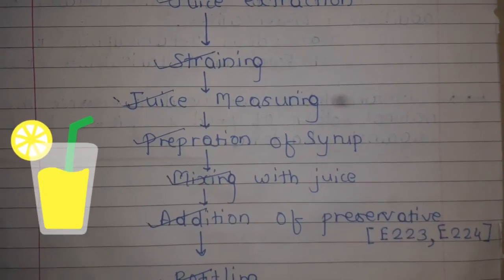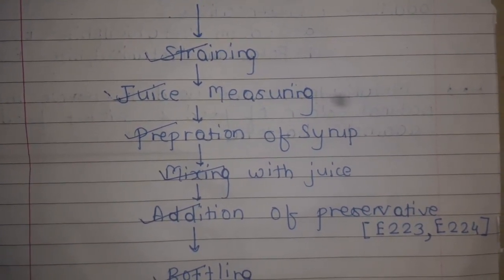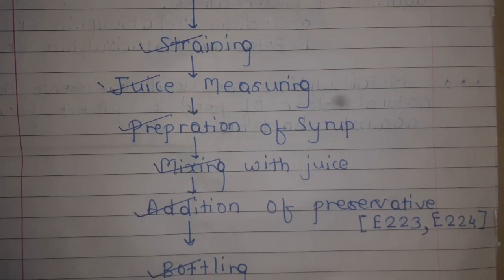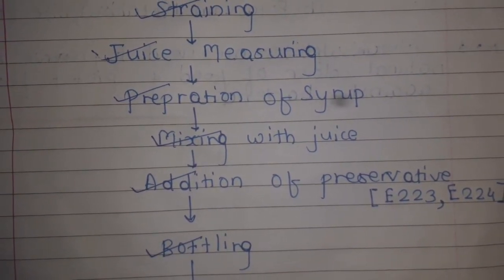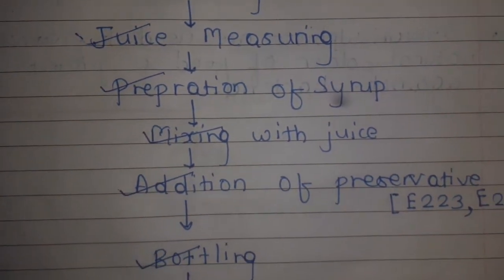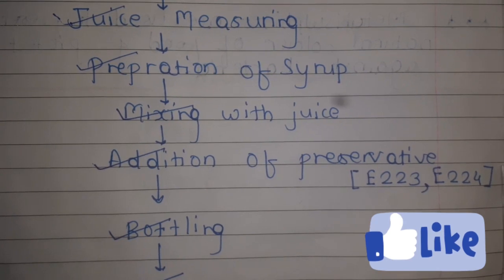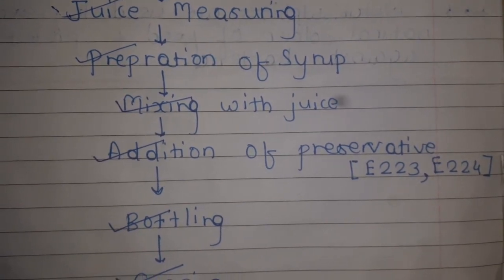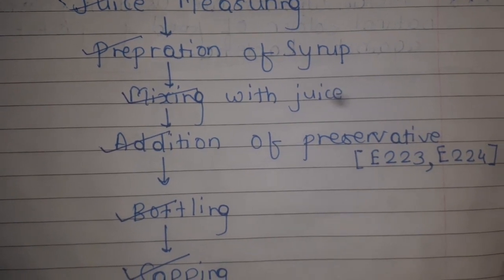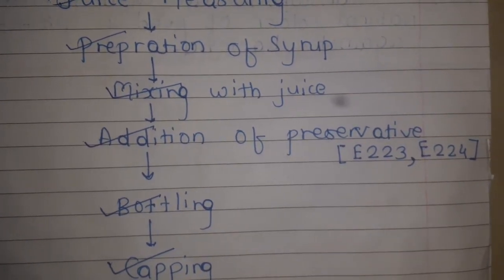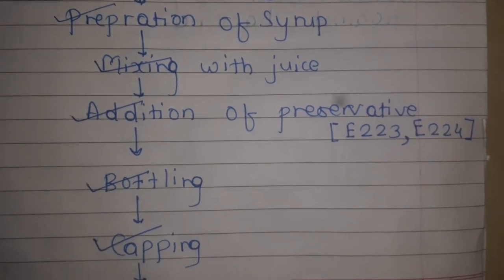For making the syrup, first add sugar, water and acid and heat just to dissolve it. Then the sugar syrup is mixed with fruit juice, with addition of sodium benzoate at 600 ppm and sulfur dioxide at 350 ppm per litre of the finished product. After that, pour the squash into previously sterilized bottles, leaving a headspace of 1.5 cm and seal them.